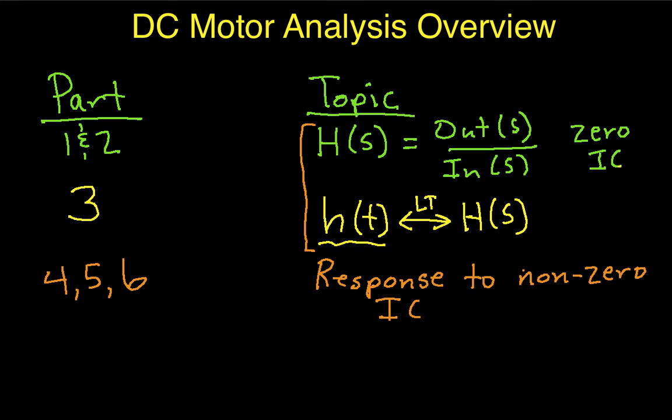In parts 4, 5, and 6 we're going to assume that we have non-zero initial conditions and in fact the assumption will be that the motor is spinning and we'll find out how the motor responds to these non-zero initial conditions. We'll actually assume that the input voltage is 0 while it's doing this. So we're going to respond to non-zero initial conditions with a 0 input voltage.